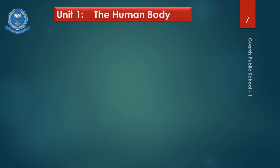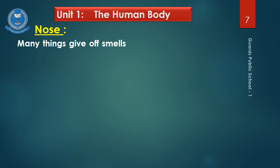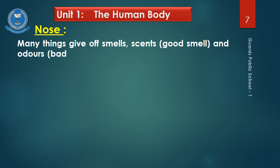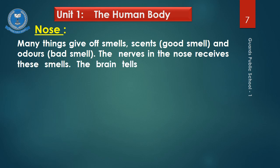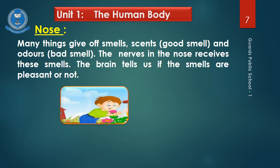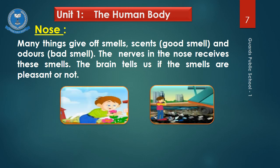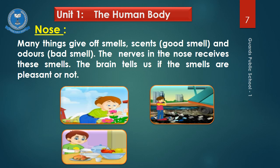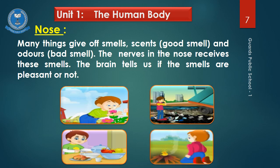Now we will talk about the nose. Many things give off smells — like scents, which means good smell, and odors, which means bad smell. The nerves in the nose receive these smells. The brain tells us if the smells are pleasant or not. The differences in smells can be known through our nose, like sweet smell or bad smell. We can also recognize food and other things by their smell.